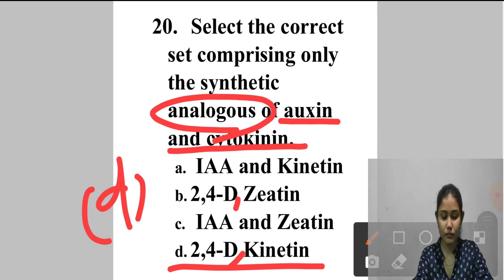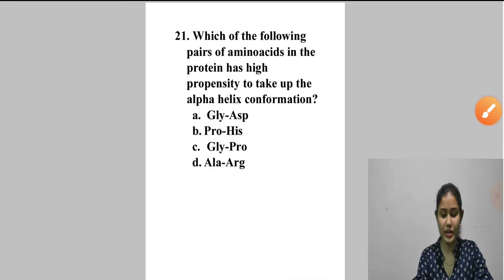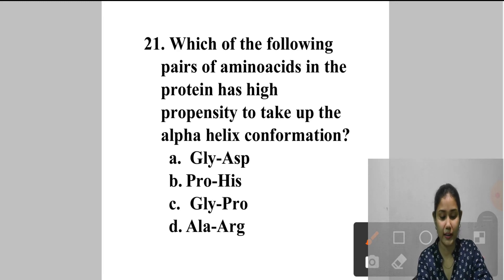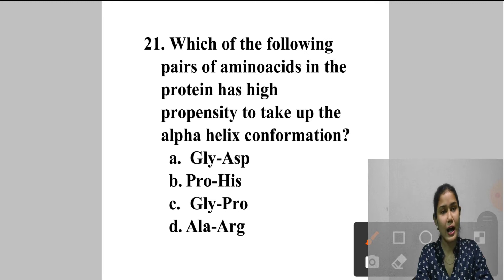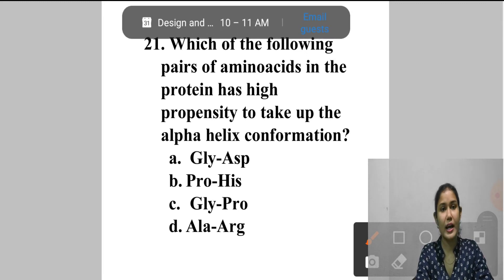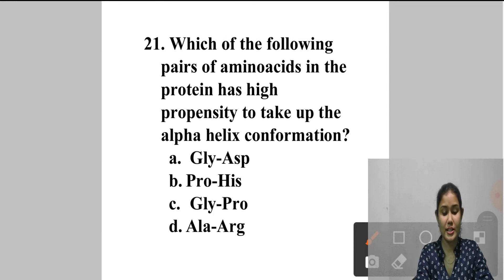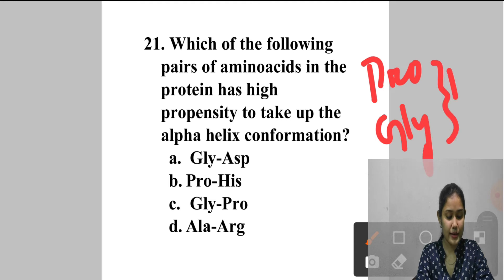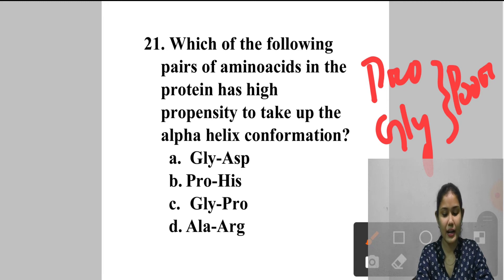Question 21: Which pair of amino acids has high propensity to take up alpha helix conformation? Different amino acid sequences have different propensities for forming the alpha helical structure. Methionine, alanine, leucine, uncharged glutamine, and lysine have high helix-forming propensities, whereas proline and glycine have poor helix-forming propensities. Options include glycine/asparagine, proline/histidine, glycine/proline, and alanine/arginine. Answer is option D — alanine and arginine.